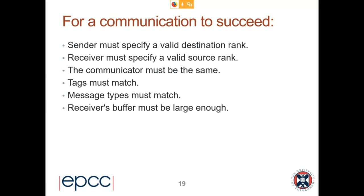For the communication to succeed, the sender must specify a valid destination rank — you can't send to rank 100 when you've only launched four processes. The receiver must specify a valid source rank. Rank indexing starts at zero, and it's always a positive integer. The communicators must be the same — ranks are not the same across communicators. Every communicator has its own list of processes, and there's no communication between different communicators.